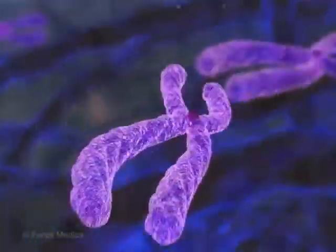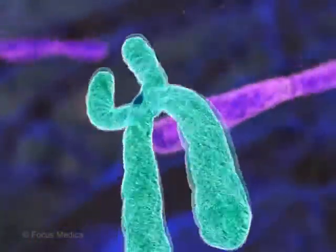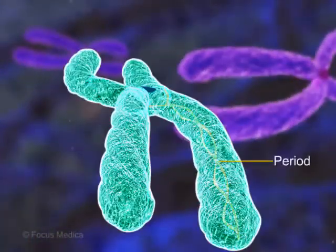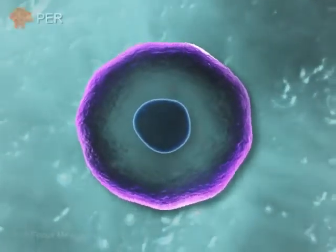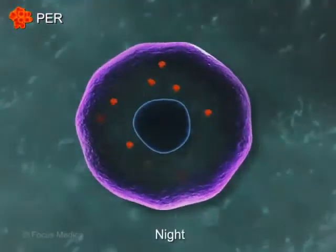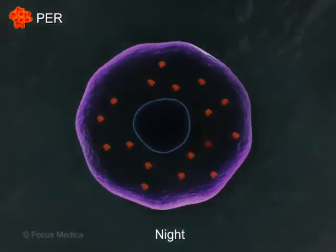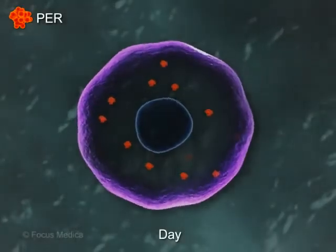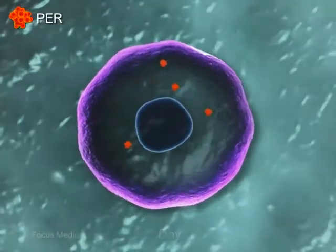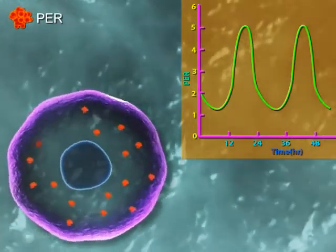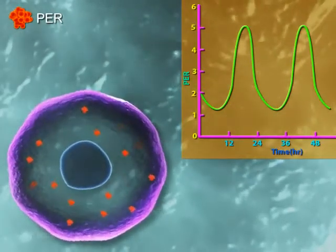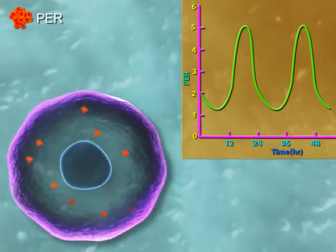An important gene that runs these clocks is called period. Hall and Rosbash demonstrated that PER protein, a product of the period gene, accumulates in the cells at night and degrades during the day. This accumulation and degradation occurs over 24 hours, effectively maintaining a cycle in line with the light-dark cycle of day and night.